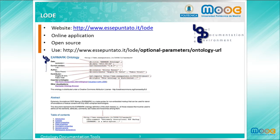LODE is a web application for generating HTML documentation from classes, object properties, datatype properties, named individuals, as well as annotation properties and general axioms that are defined within the ontology. LODE is open source and can be used online.